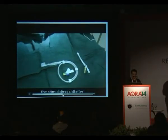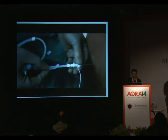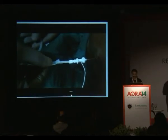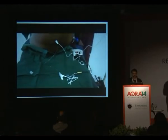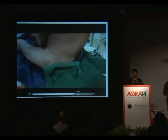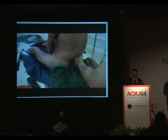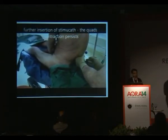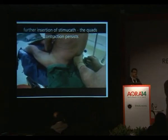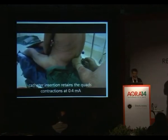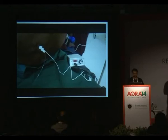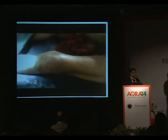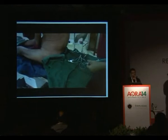This is how the stimulating catheter is inserted: you neurostimulate at 1 mA and keep inserting the catheter while verifying that contractions still persist. In private practice, you do it all alone without the luxury of having people around, so you need to monitor everything including hemodynamics at all points. At 0.4 mA with good contractions, at sufficient length — maybe 6 to 7 centimeters inside the sheath — you can keep the catheter there and inject your local anesthetic.